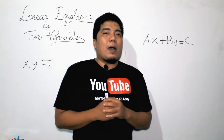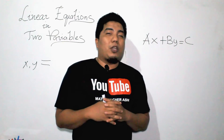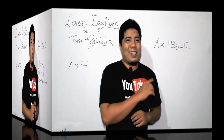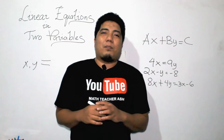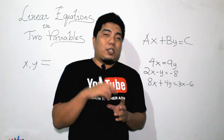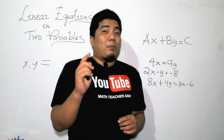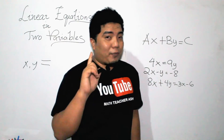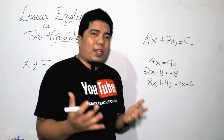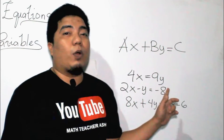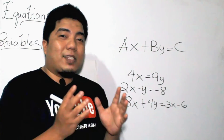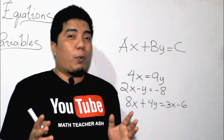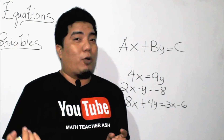Now, what are certain examples for us to know whether a given equation is a linear equation in two variables? We have here three different examples of linear equations in two variables. Why? Because all of these equations follow two variables in the first degree. Let's check them one by one. We have here 4x is equal to 9y. This has both two variables, x and y, and has the exponent of the first degree, or to the power of 1.